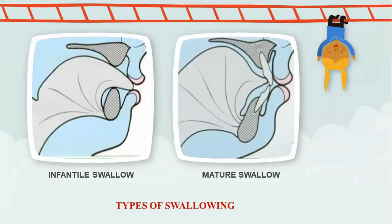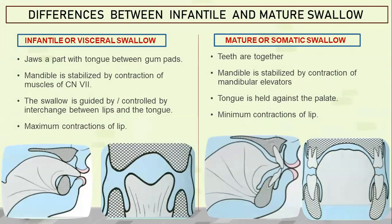It is important to understand infantile and mature swallow, two important concepts in tongue thrusting. Infantile swallow is also known as visceral swallow, while mature swallow is known as somatic swallow. In infantile swallow, the jaws are apart with the tongue between the gum pads, the mandible is stabilized by contraction of muscles of the seventh cranial nerve (facial nerve), and the swallow is guided by interchange between lips and tongue with maximum contractions of lips. In mature or somatic swallow, the teeth are together, the mandible is stabilized by contraction of mandibular elevators, the tongue is held against the palate, and there is minimum contraction of lips.